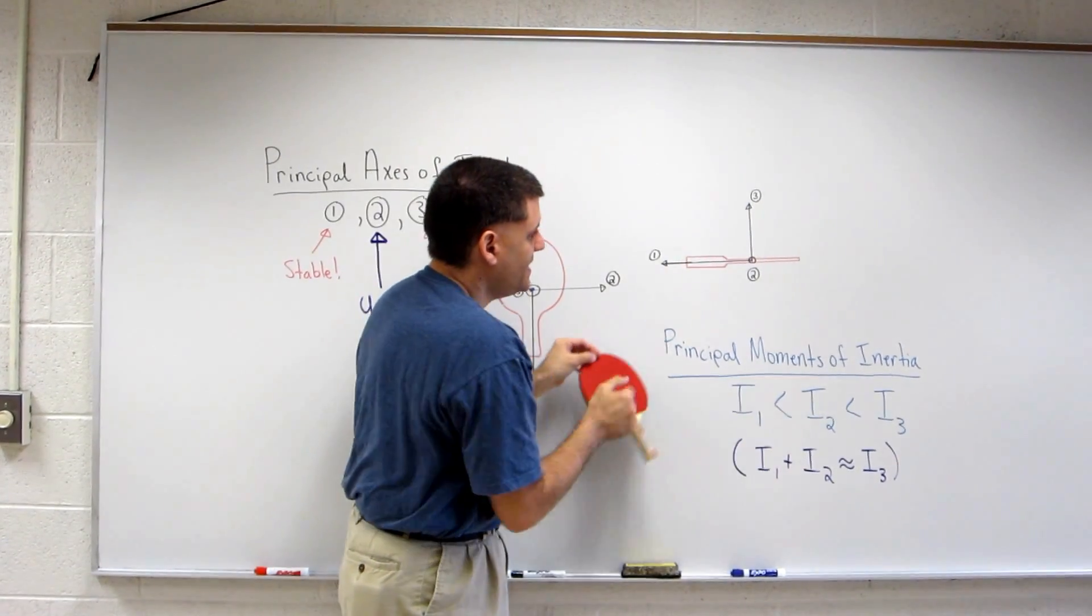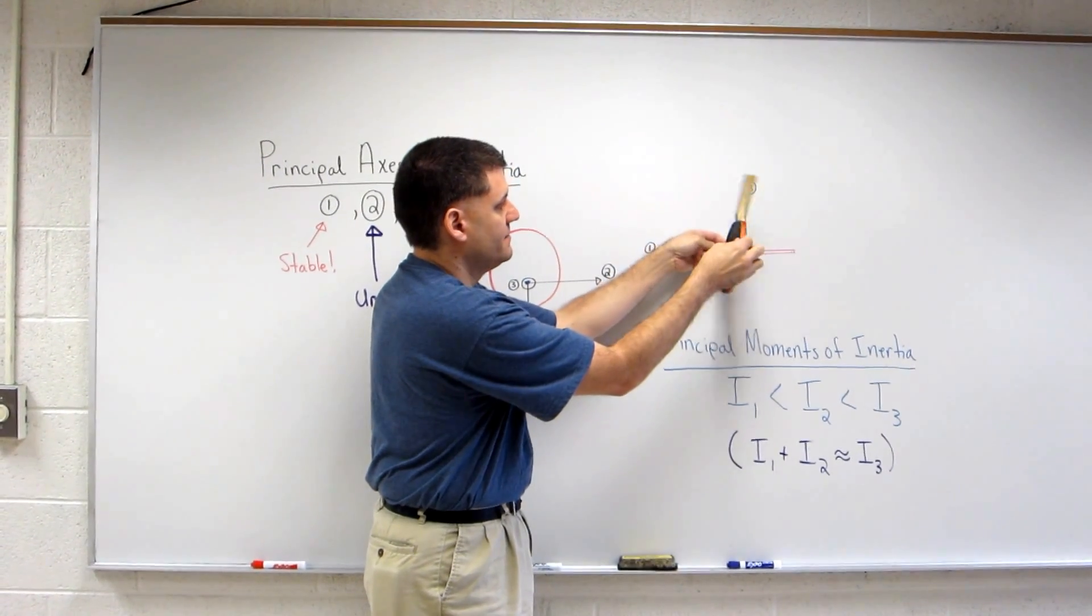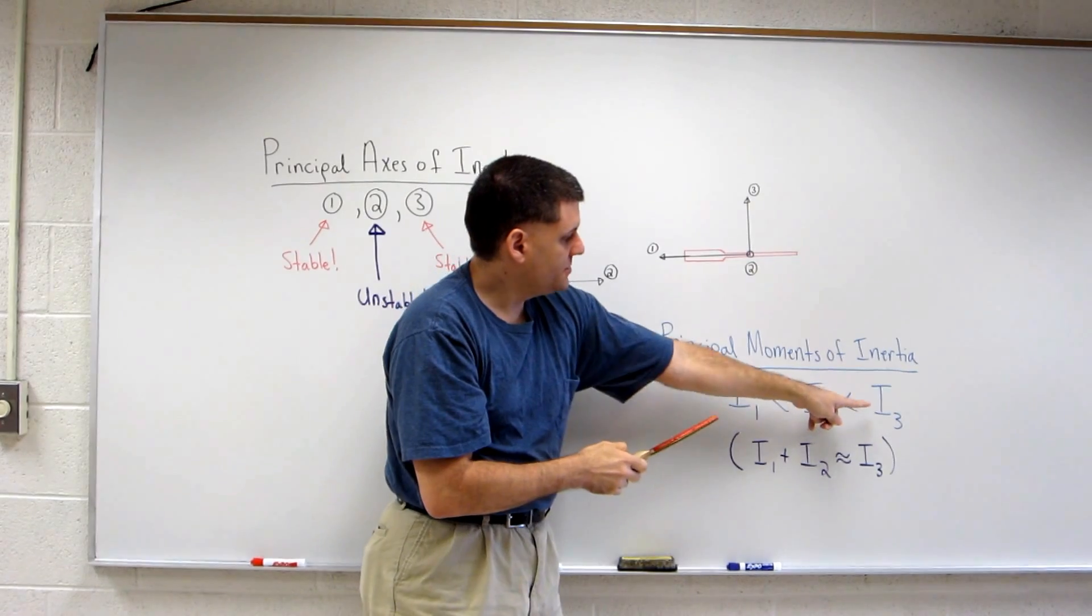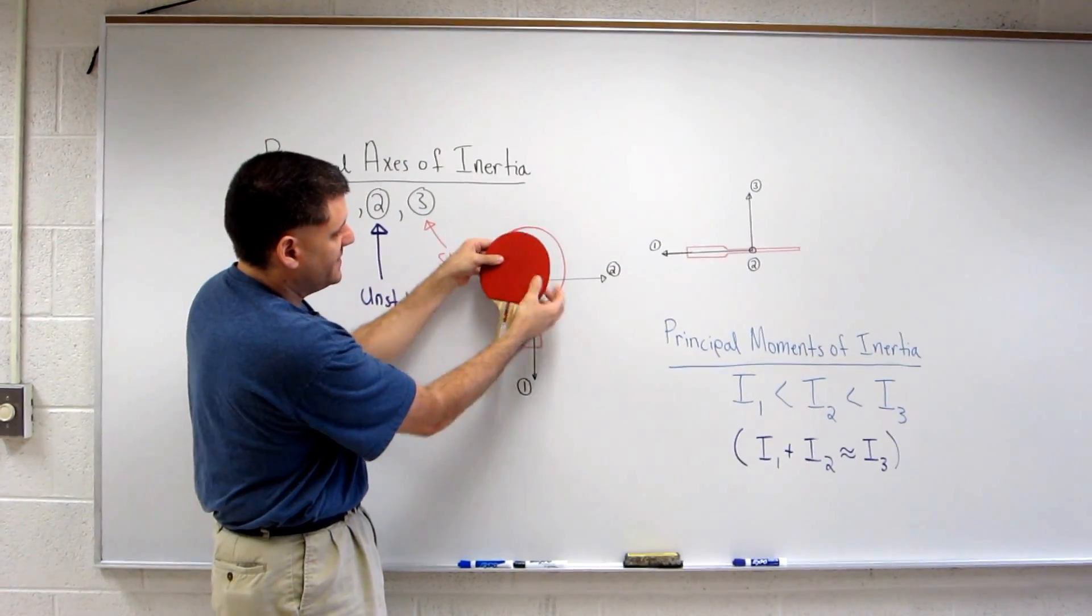followed by the second axis. So rotation like that leads to the intermediate moment of inertia. And the largest moment of inertia is about the three axis where the paddle would be rotating like that.